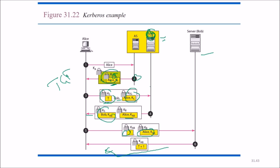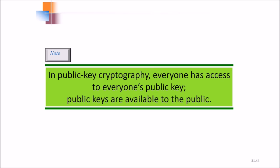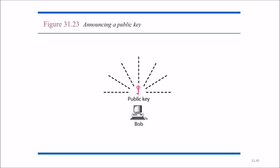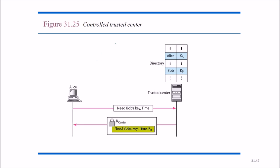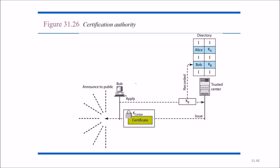In public key cryptography, everyone has access to everyone's public key. To announce a public key, you announce it to everyone and use a trusted center (KDC). For the trusted center, directories for Bob, Alice, etc. are maintained. In a controlled trusted center, whenever Alice needs Bob's key, she sends a request to the trusted center, which returns Bob's key and a timestamp. A certification authority checks that the key is correctly recorded before issuing a certificate for public announcement.